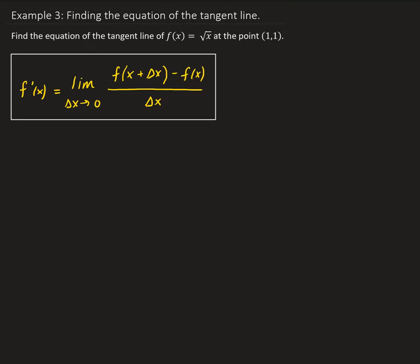In this example, we want to find the equation of the tangent line of the given function at the point (1, 1). The first thing we need to do is find the derivative. Using the derivative, that will allow us to find the slope of the tangent line, and then from there we can find the equation of that tangent line.